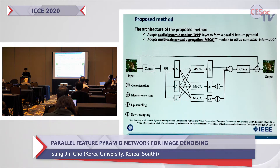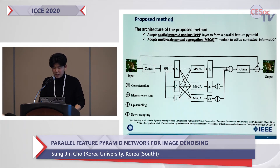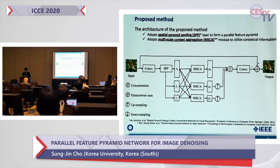This slide shows the architecture of our network. To cover the full characteristics of the image structure, we utilize multi-scale feature maps by adopting a spatial pyramid pooling and multi-scale context aggregation modules. The SPP forms a parallel feature pyramid, which consists of multi-scale feature maps. The MSCA module combines these multi-scale feature maps to generate a contextual feature map.